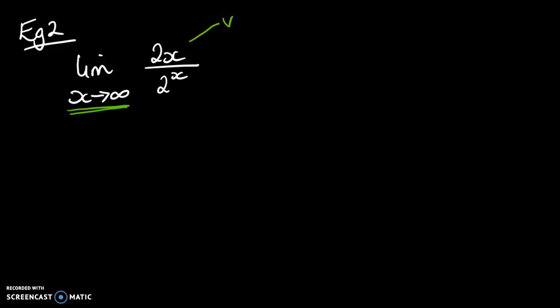So with this one, we imagine that x is very big. And what would that do to that expression? So that would become 2 times something very big. Let's just imagine it's maybe like 2 times 1,000. And then that would be over something that is 2 to the power of 1,000.